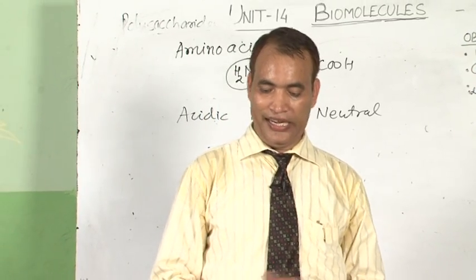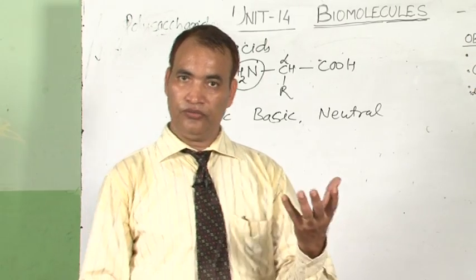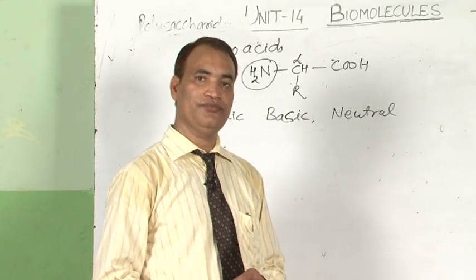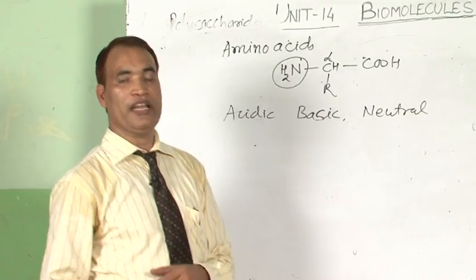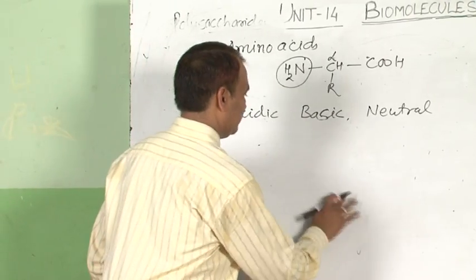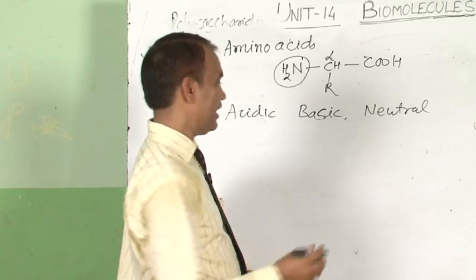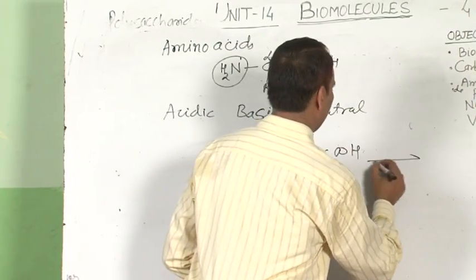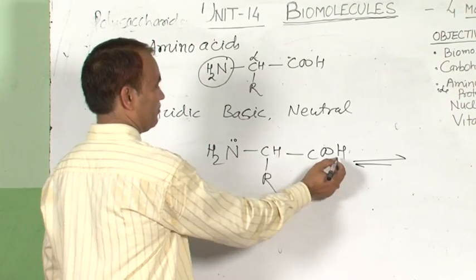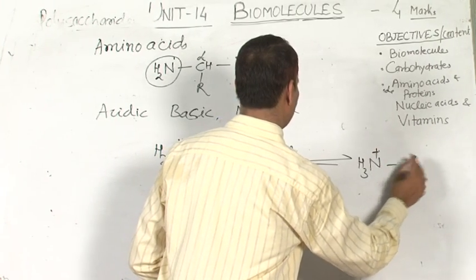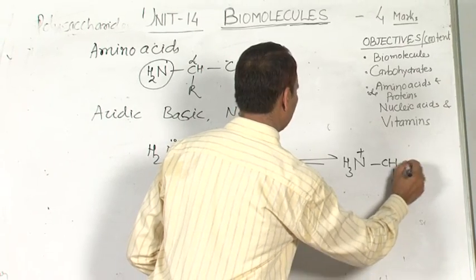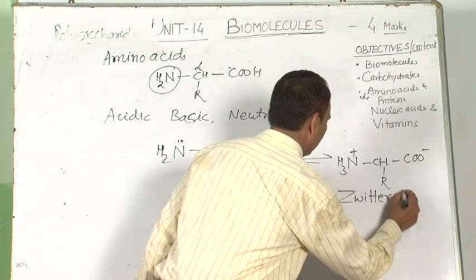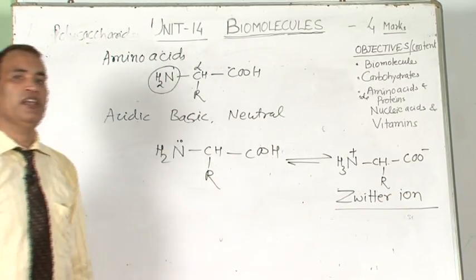Neutral amino acids include glycine, alanine, valine, and leucine. Basic amino acids include arginine and lysine. Acidic amino acids include glutamic acid and aspartic acid. One more important concept is the zwitter ion. When an amino acid is dissolved in water, it exists in a dipolar amphoteric form — the amino group accepts a proton from the carboxylic group, making it NH3+. This dipolar form of an amino acid is known as the zwitter ion, and it is amphoteric in nature, acting as both acidic and basic.